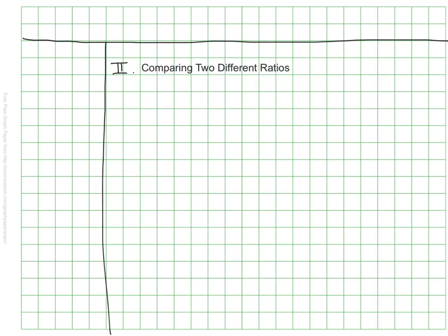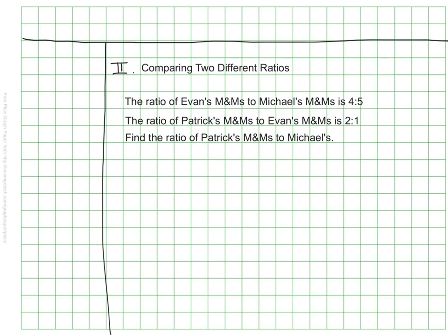A second example of when you might use tape diagrams for more complex problems is when we're looking at comparing two different ratios. In this example, we know the ratio of Evan to Michael's M&Ms and Patrick to Evan's M&Ms, but we're trying to figure out a third combination. We want to figure out the ratio of Patrick's M&Ms to Michael's. Again, this tape diagram is going to help us out.